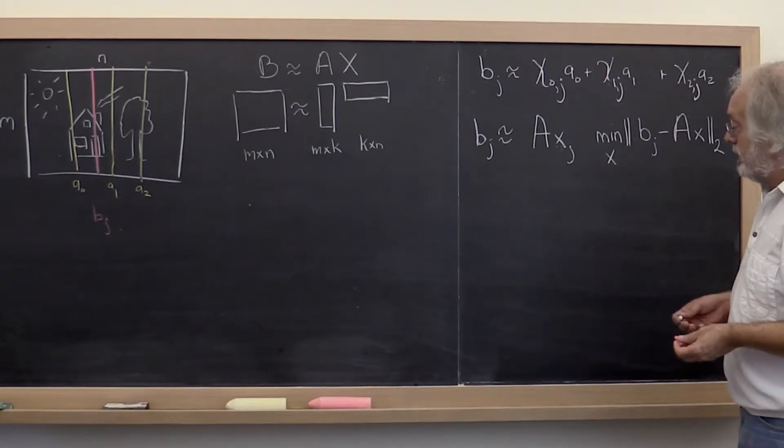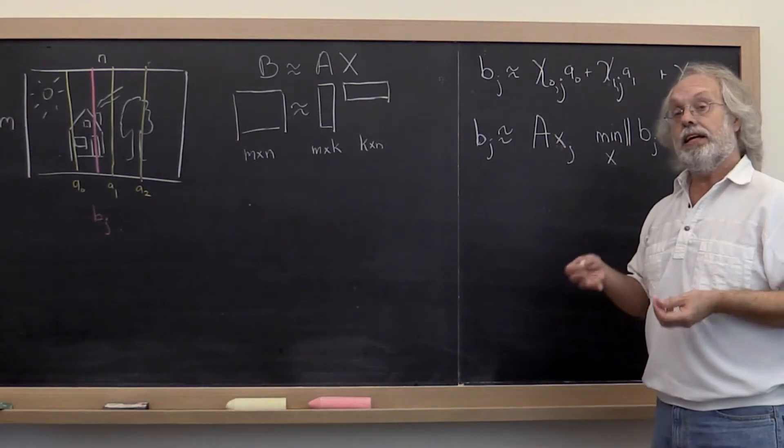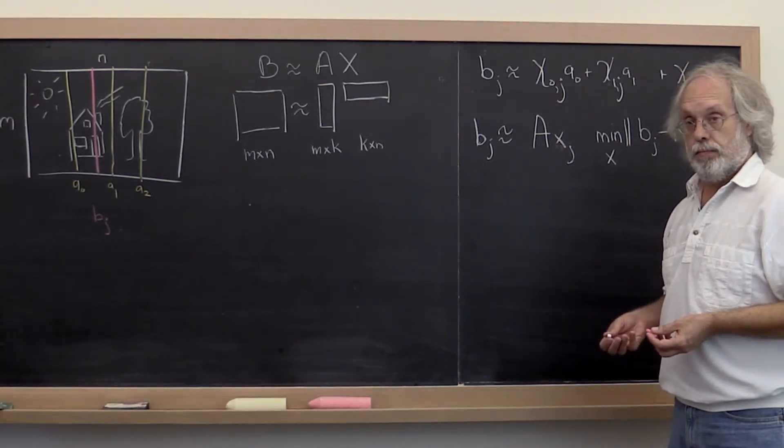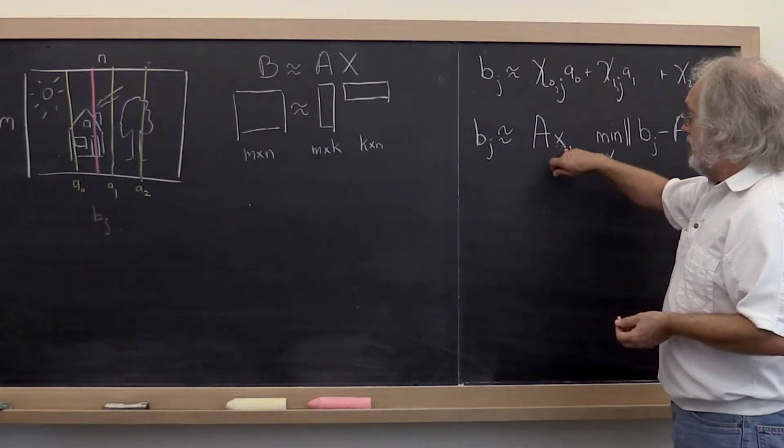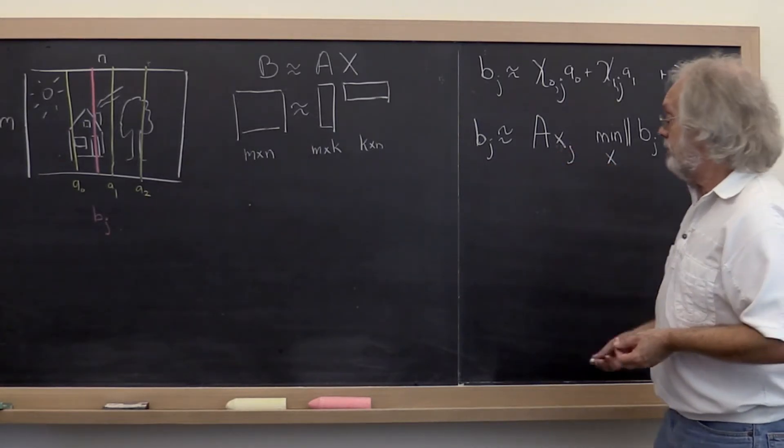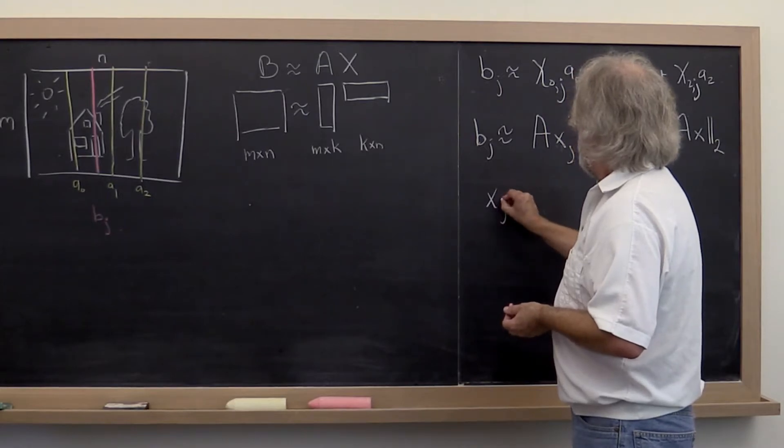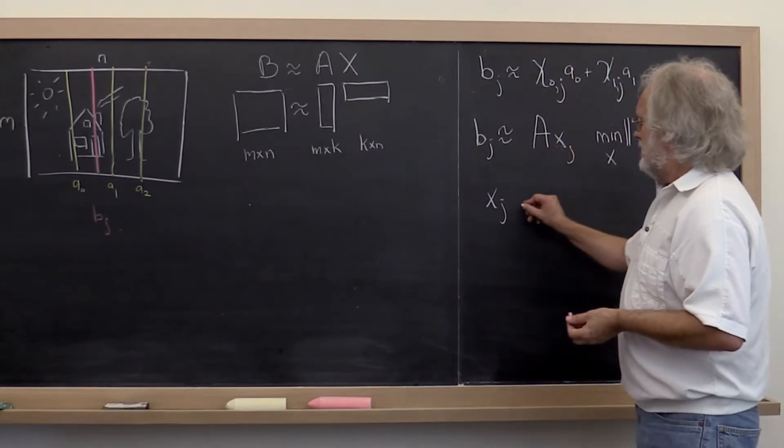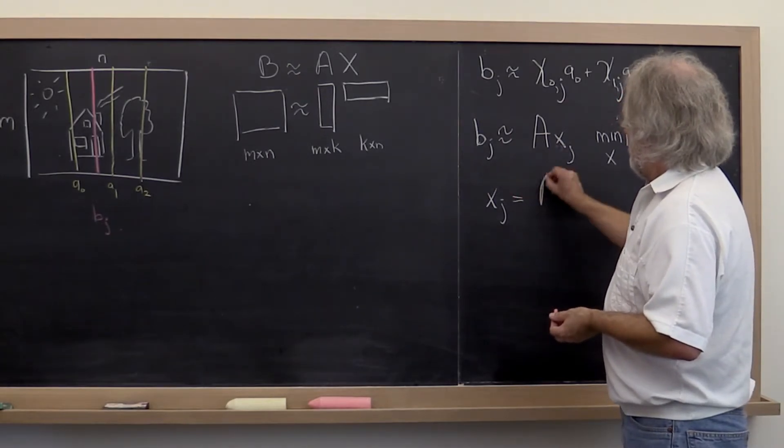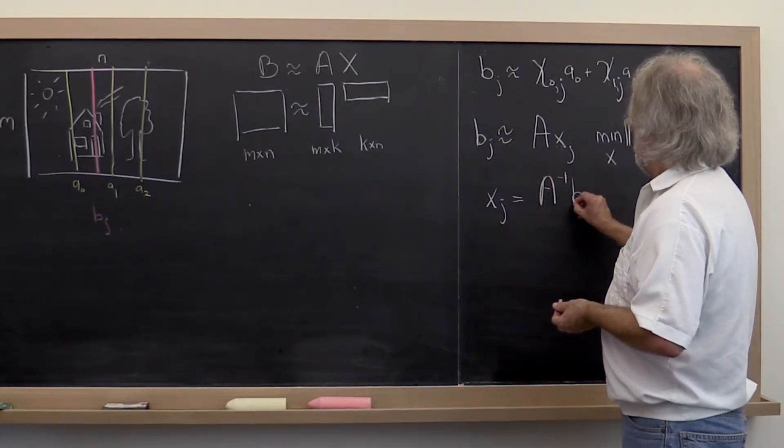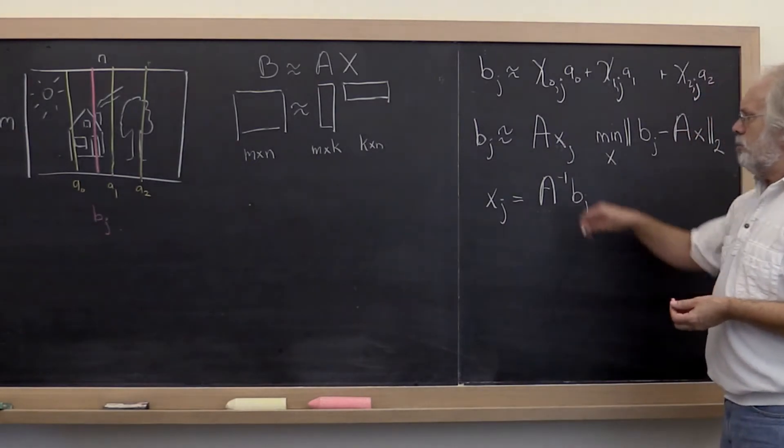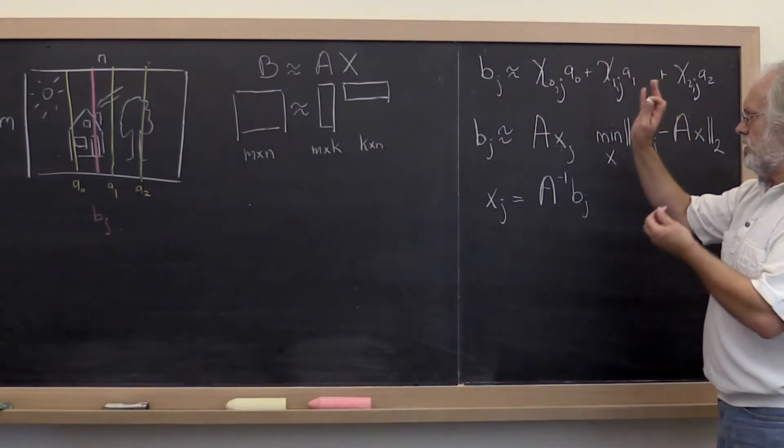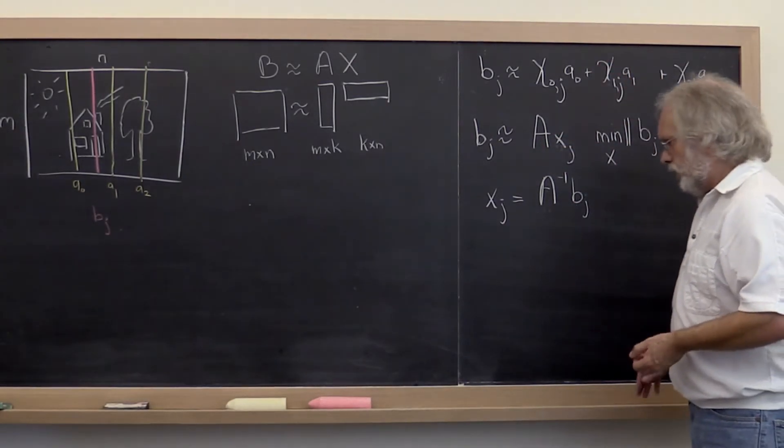Now if A has linearly independent columns, then the best such solution is given by, well let's see, if A were square and invertible, then xj would simply be A inverse times Bj, right? But A has more rows than columns in this case. So we can't do that.